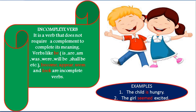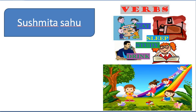The third type is the incomplete verb, which requires a complement to complete its meaning. Verbs like be, is, are, am, was, were, will be, shall be, becomes, appear, seem, and look are incomplete verbs. I am discussing this because nowadays students discuss incomplete verbs as well. With this, I would like to thank you all. If you haven't understood, kindly put it in the comment box and I will be able to answer. Thank you, take care, bye.